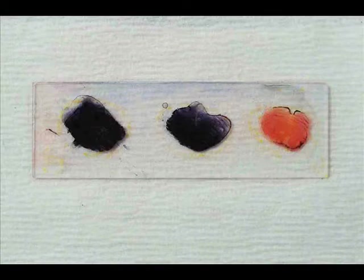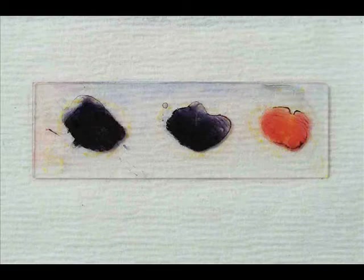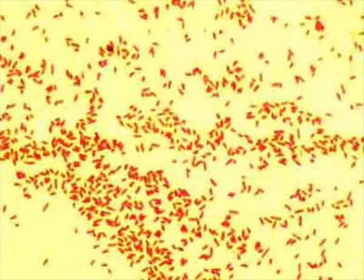My Gram-negative control is on the right. It's stained pink, meaning that it's retained the counter stain. In this sample, I've used Escherichia coli, or E. coli, a known Gram-negative organism.